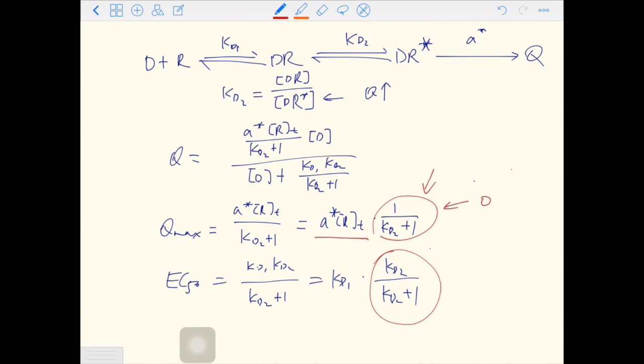For the EC50, when Kd2 approaches 0, this term approaches 0. When Kd2 approaches an extremely large number, this term approaches 1. So when Kd2 increases, EC50 will increase, and Qmax will decrease.